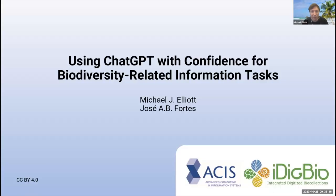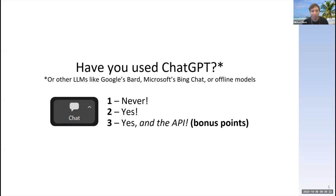Without further ado, there will be questions — I have some questions that Debbie can ask in the Q&A, and I'll put some in the Google doc. So Nicky, please — ChatGPT is the hotness talk here. Michael, take it away please. The title is 'Using ChatGPT with Confidence for Biodiversity Related Information Tasks' — purposefully very vague. To start out, I'm just wondering if I could conduct a little poll: have you used ChatGPT? I mean any language models — Google's Bard, Microsoft's Bing Chat, or your own offline models if you're brave.